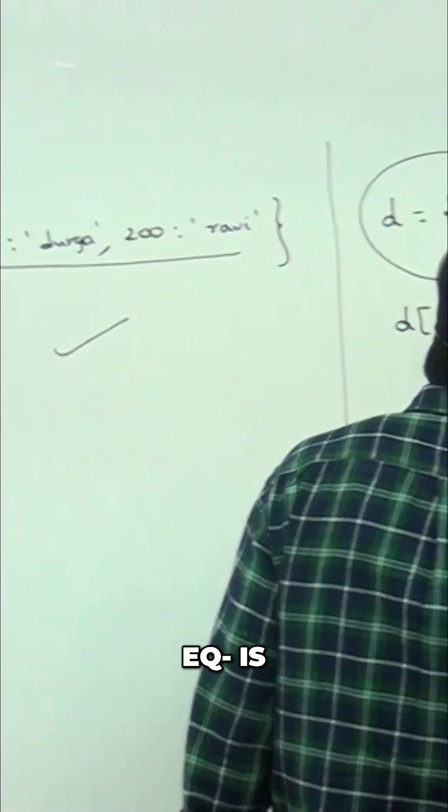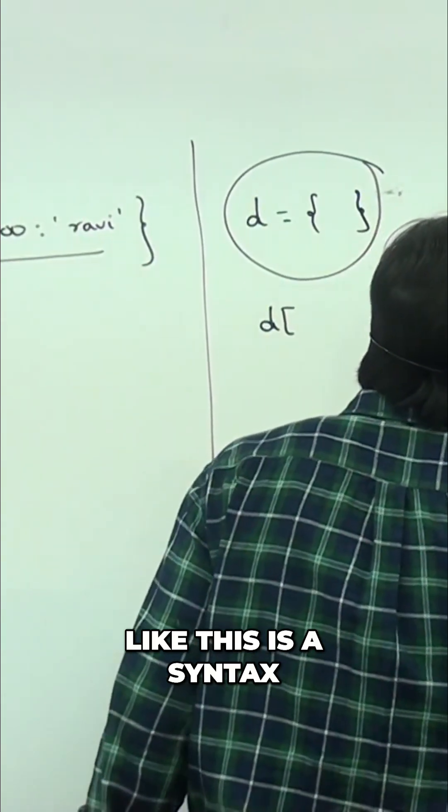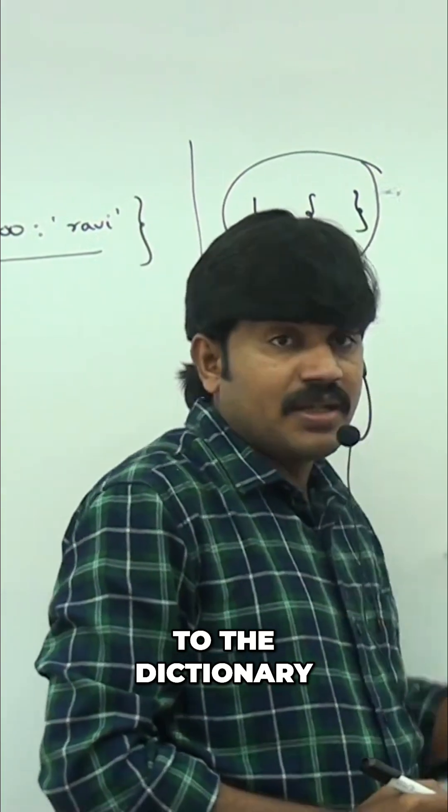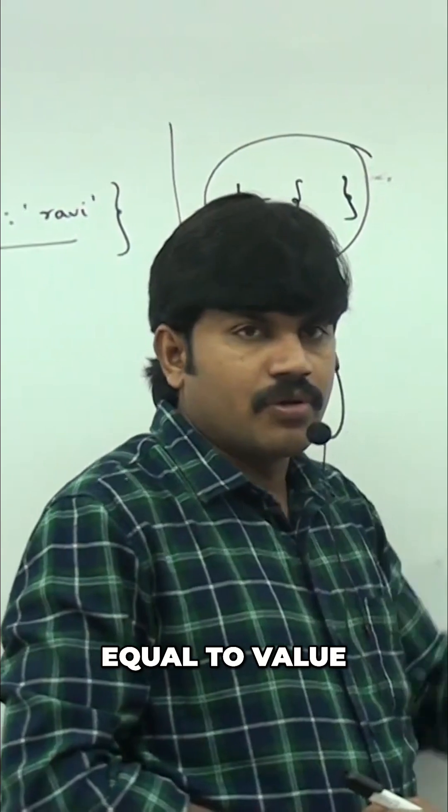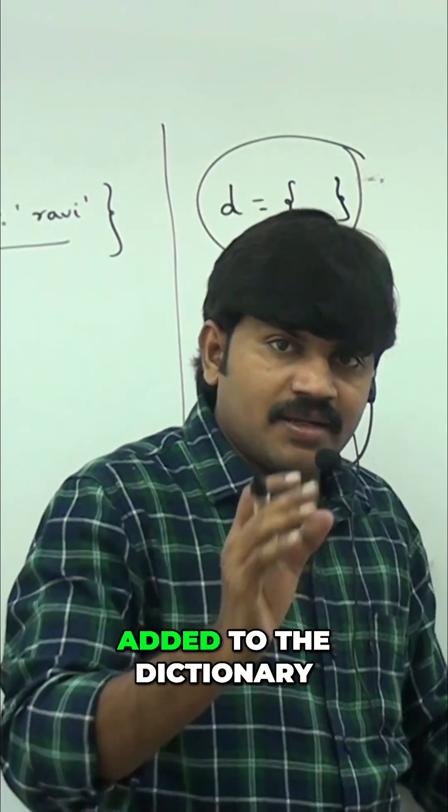d of key equals value. This is the syntax. If you want to add one key-value to the dictionary, d of key equals value. Automatically this key-value will be added to the dictionary.